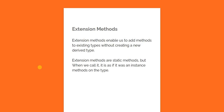Extension methods are essentially static methods. But when we call them, instead of calling like a static method where we use the class name dot method name, they are called on an instance of a type as if it was a method of that type. We use extension methods almost regularly through LINQ — all the LINQ methods are nothing but extension methods.